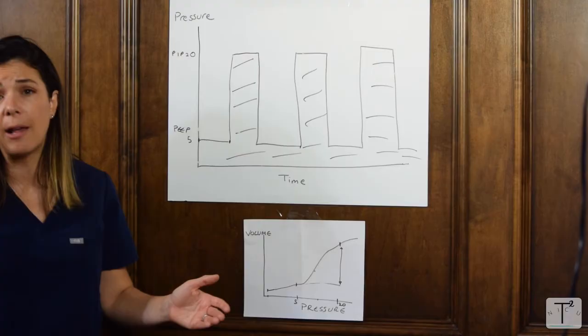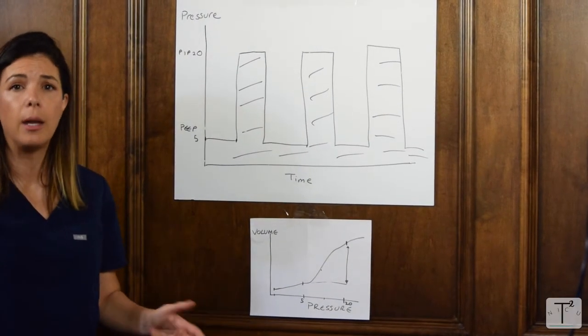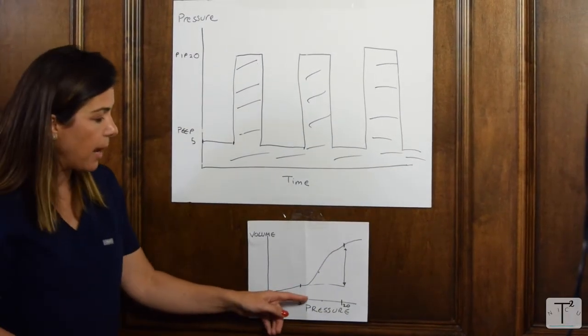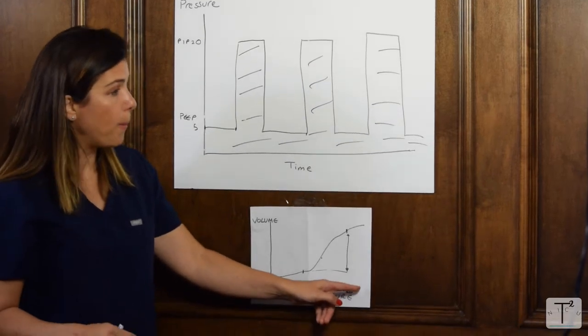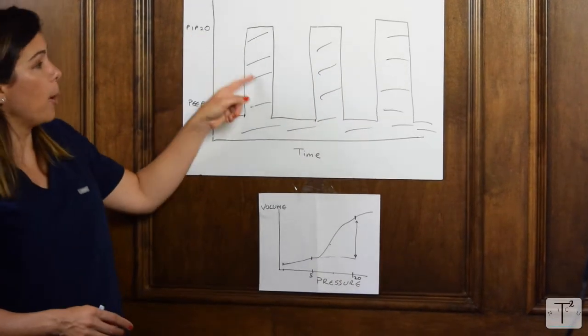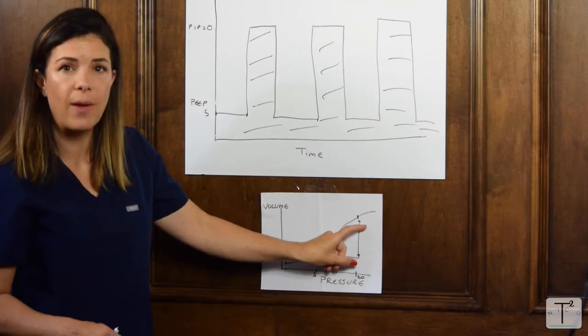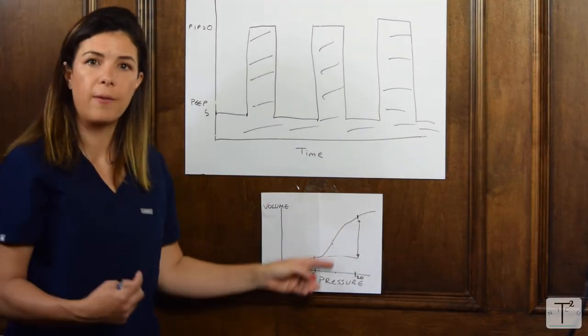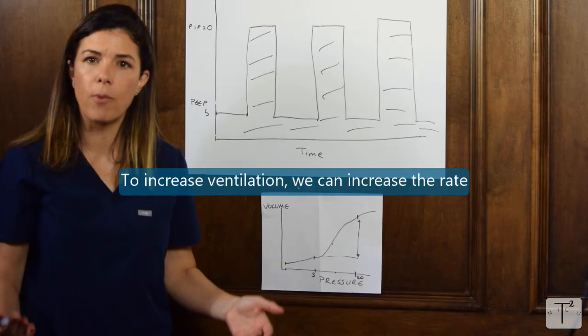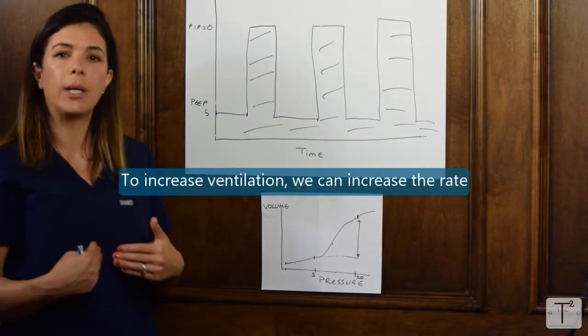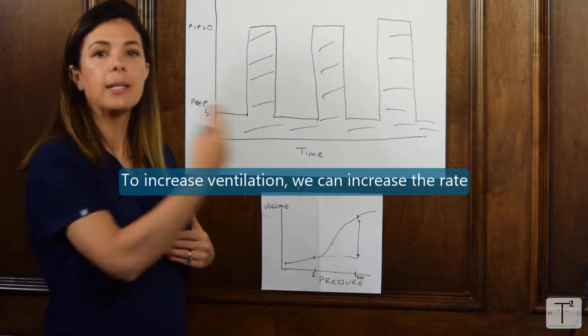If we're really in desperation from an oxygenation standpoint, we might go higher than that. But generally, we're keeping the PEEP the same. When we go up on the PIP, then we are affecting both the oxygenation as well as the ventilation. What else can we do to affect the ventilation? We can increase the rate because the rate also will allow more of that carbon dioxide to leave the lungs.